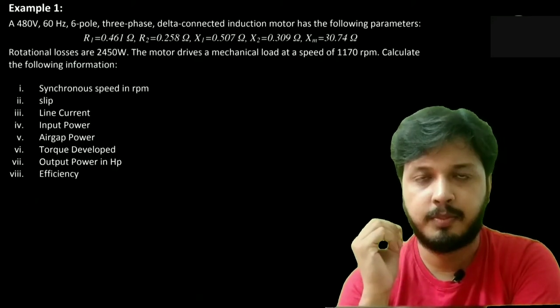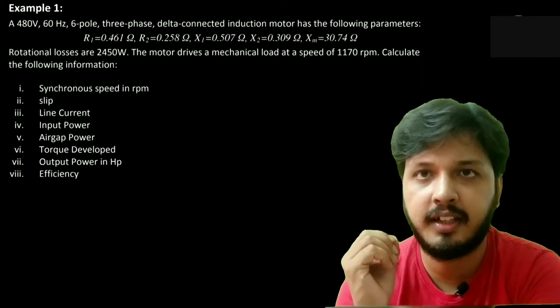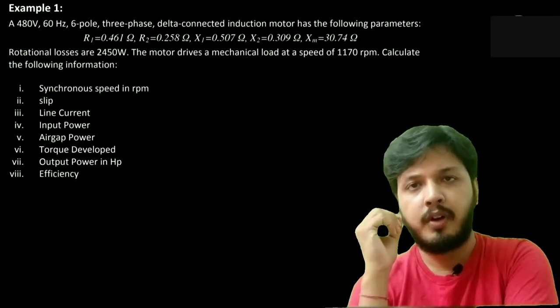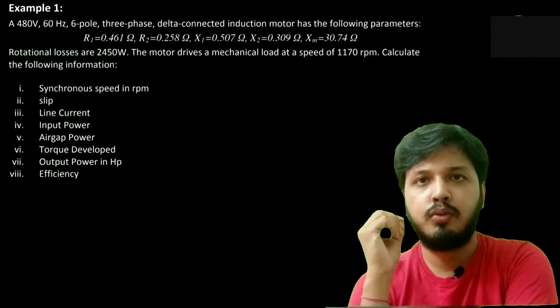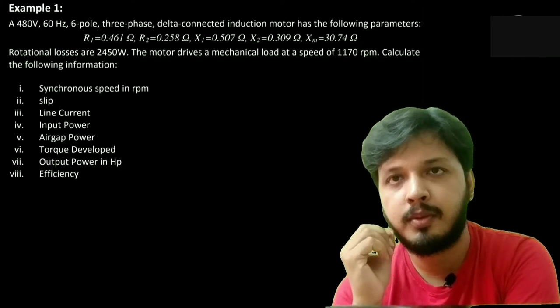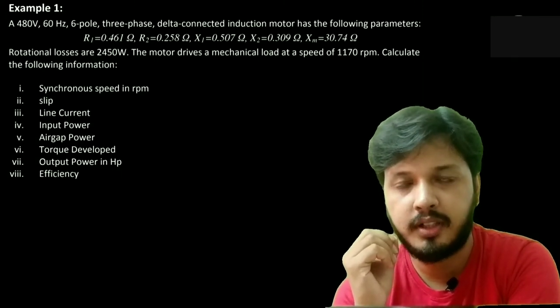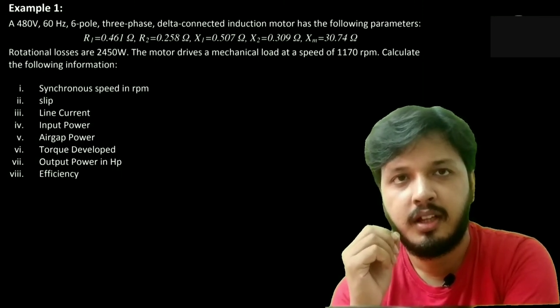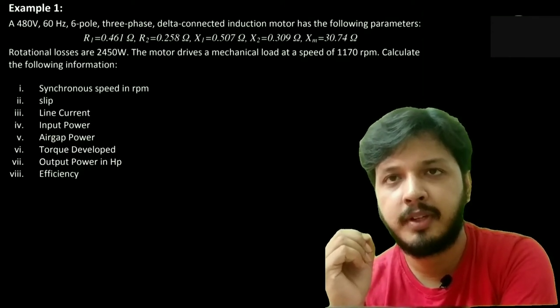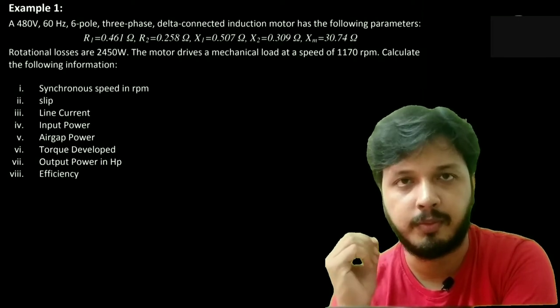Now see this example. A 480 volt, 60 hertz, 6 pole, 3 phase delta connected induction motor has following parameters: R1 equals 0.461 ohm, R2 equals 0.258 ohm, X1 equals 0.507 ohm, X2 equals 0.309 ohm, XM equals 30.74 ohm. The rotational loss is 2450 watt. The motor drives a mechanical load at a speed of 1170 rpm. Calculate the following information: